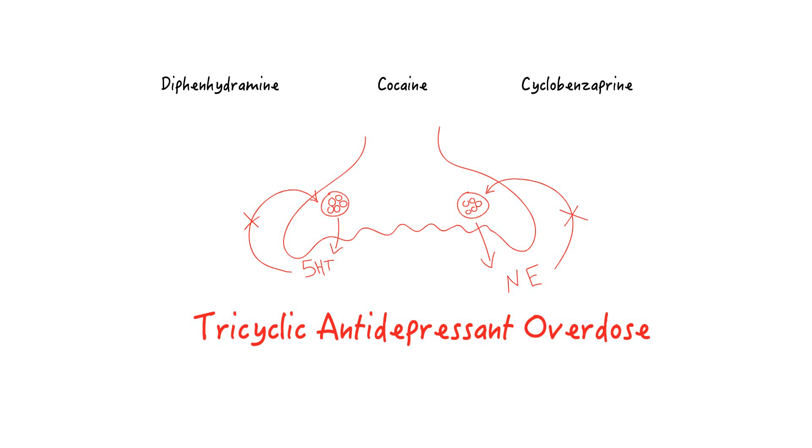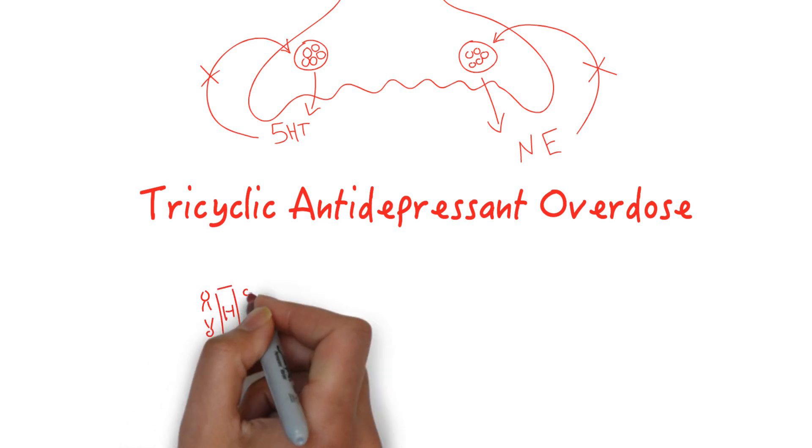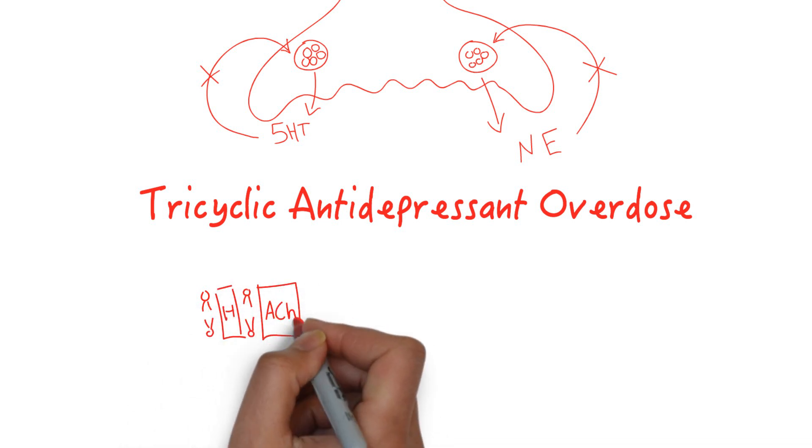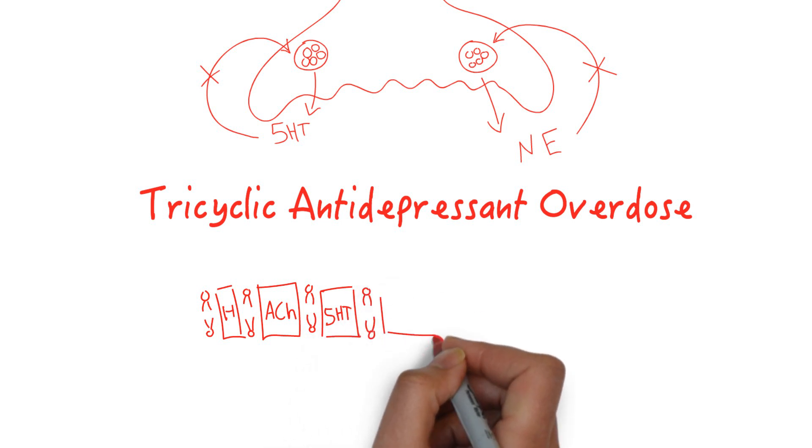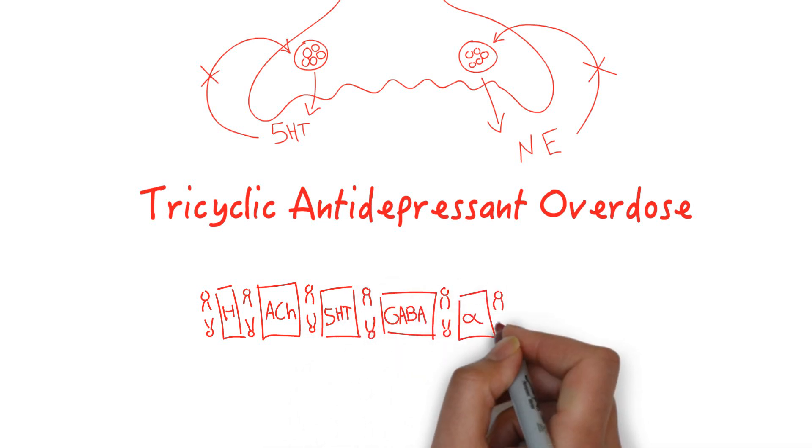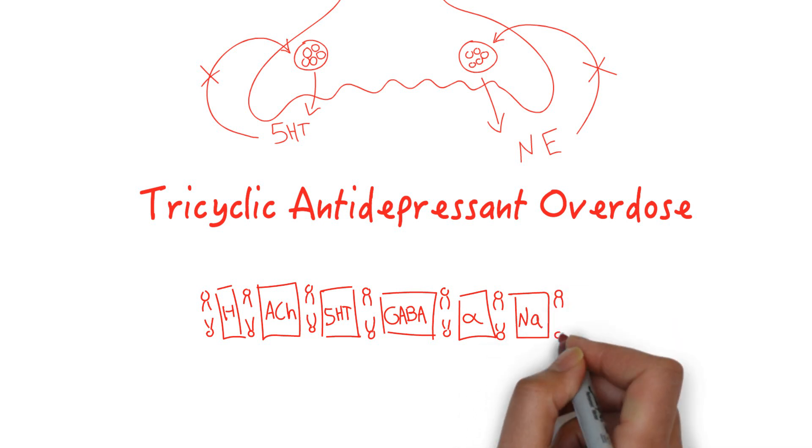They have pleiotropic effects, including blocking histamine receptors, acetylcholine receptors, serotonin receptors, GABA receptors, alpha adrenergic receptors, sodium channels, and potassium channels. Some toxicologists refer to this as the seven deadly sins.